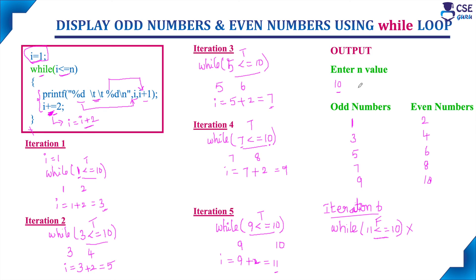So this is the output we get for n value 10: odd numbers are 1, 3, 5, 7, 9 and even numbers are 2, 4, 6, 8, and 10. We can enter any n value and accordingly it will consider the iterations. Whenever the condition is true it will allow the body of the loop to execute; whenever the condition fails, the loop will terminate. This is the logic of while loop to display odd numbers and even numbers.